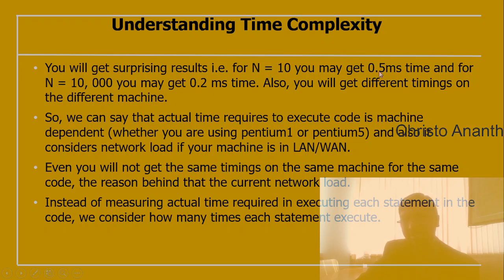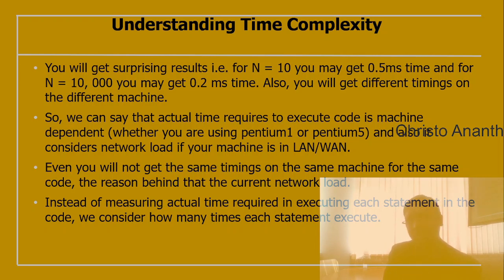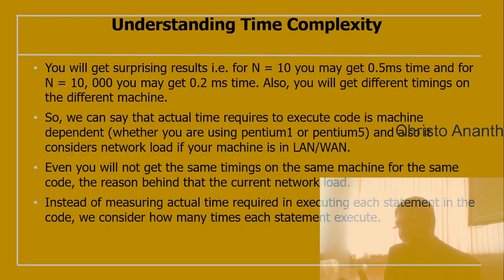Running with the time command, you might get 0.5 milliseconds for n=10 and 0.2 milliseconds for n=10,000. The actual time depends on the machine — whether you use a Pentium 1 or Pentium 5 processor — and even network load. You won't get the same timing on the same machine for the same code due to varying workload. So instead, we count how many times each statement executes.